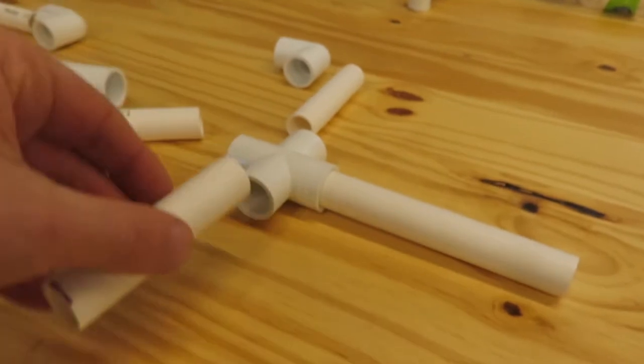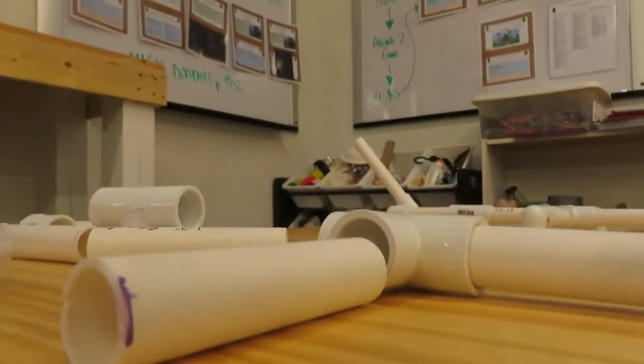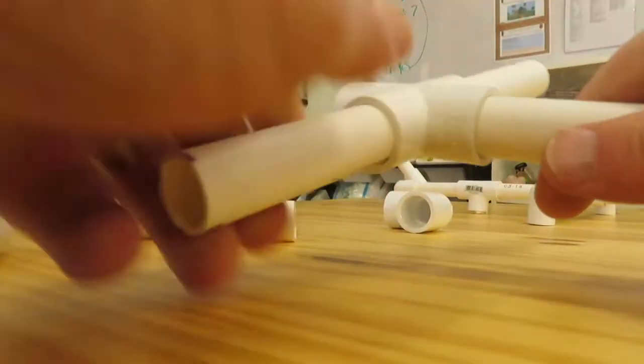I'm going to go ahead and attach the four-inch pieces for the legs. This is going to give you some leverage so that when you go to put your two-liter onto the ground, it doesn't drag.